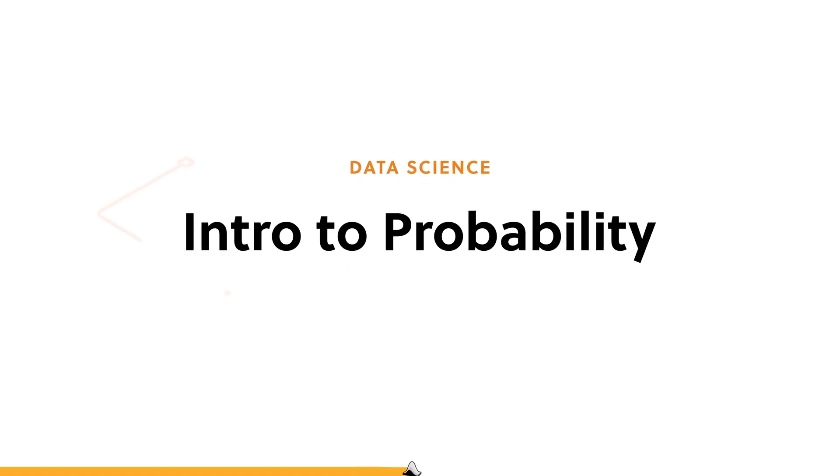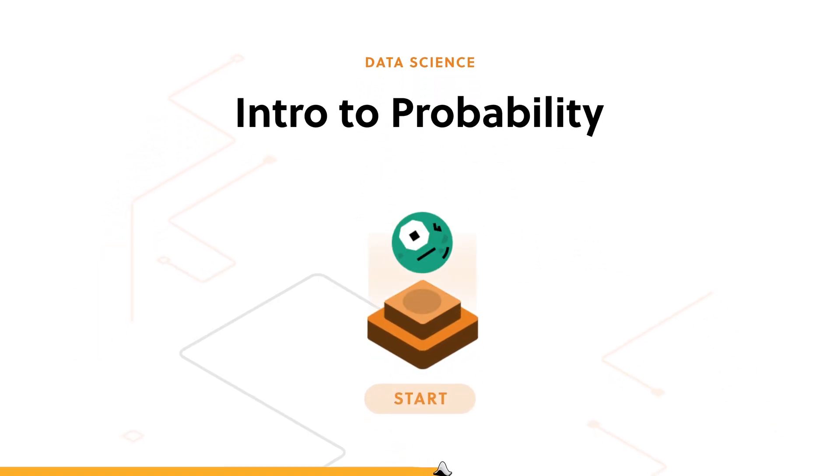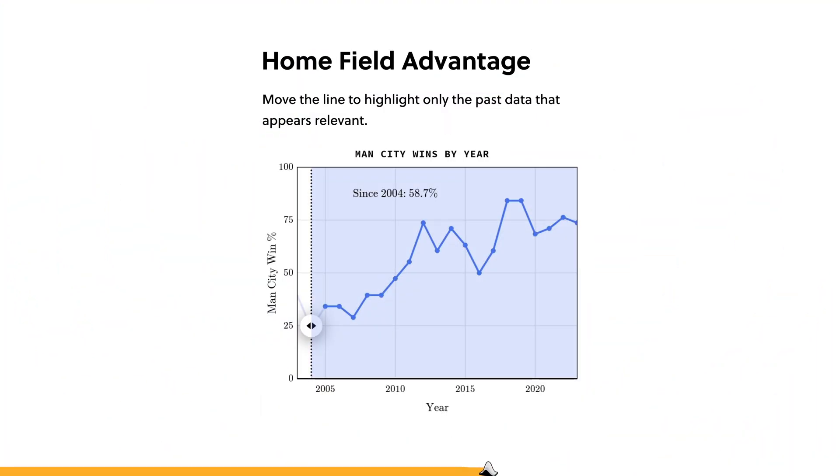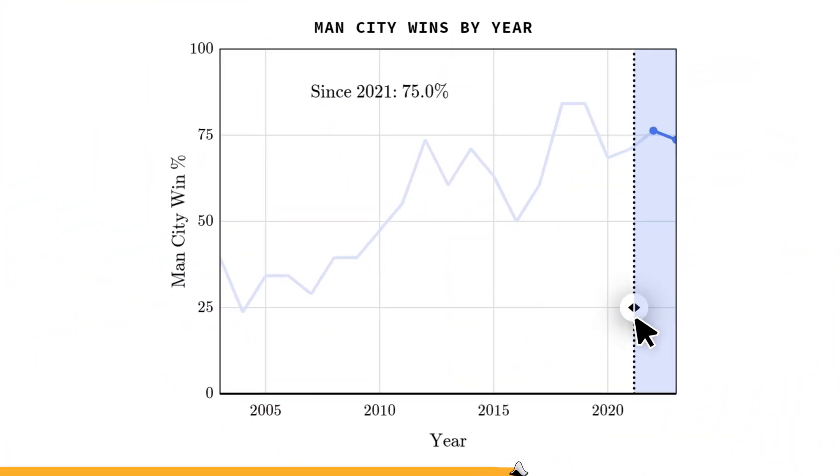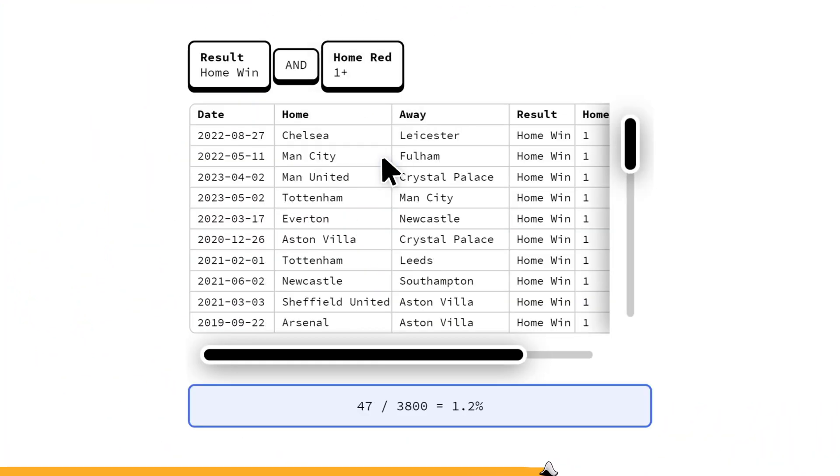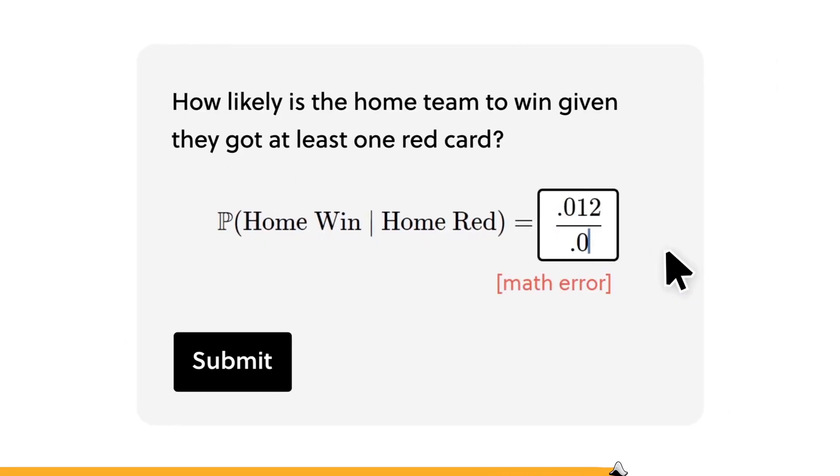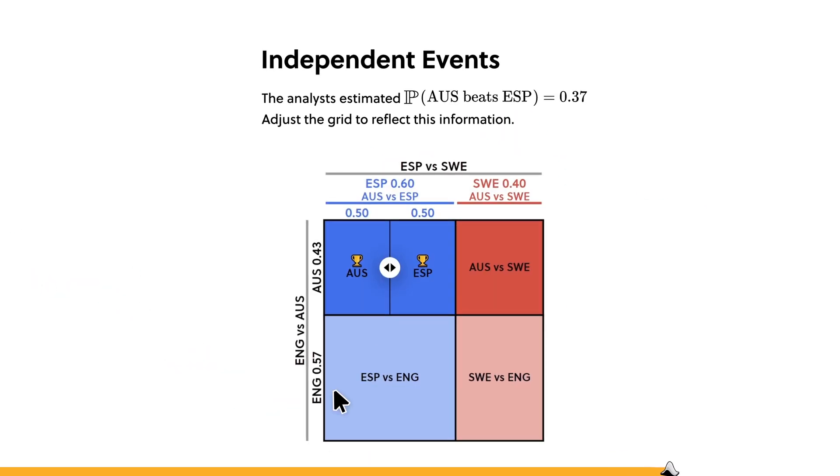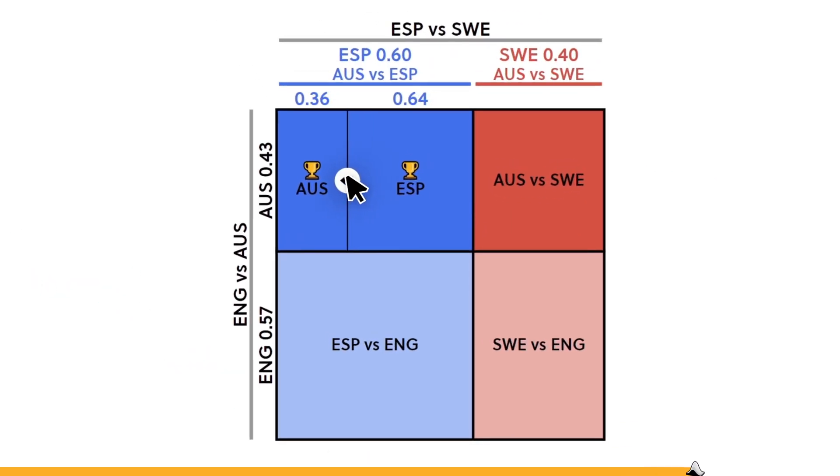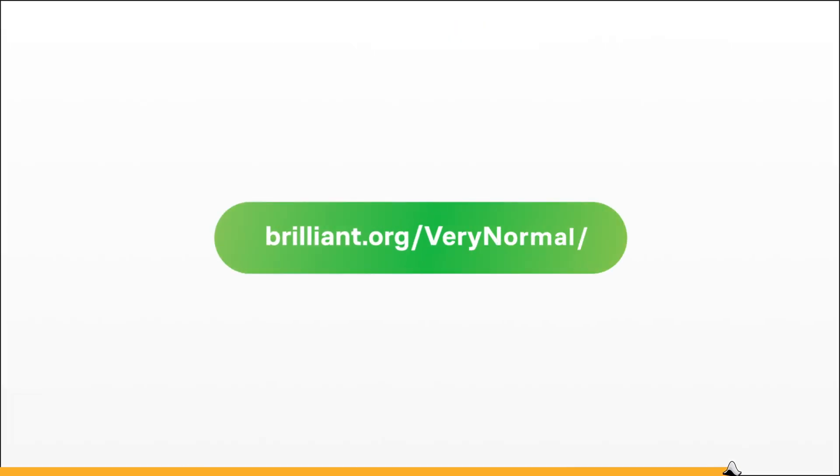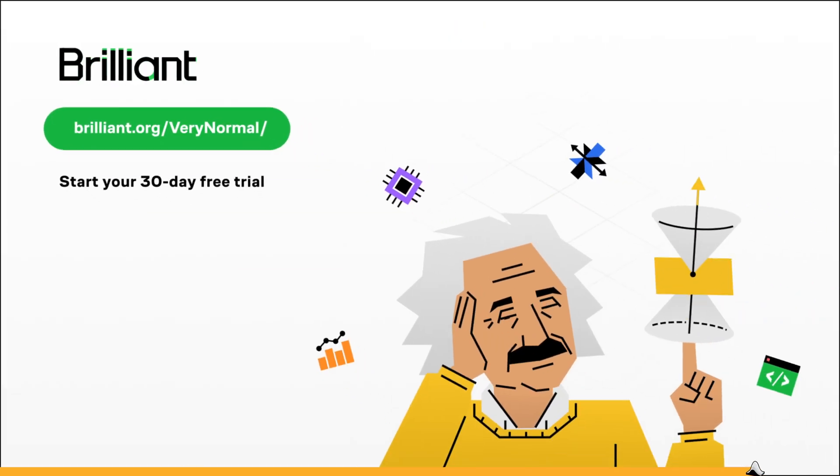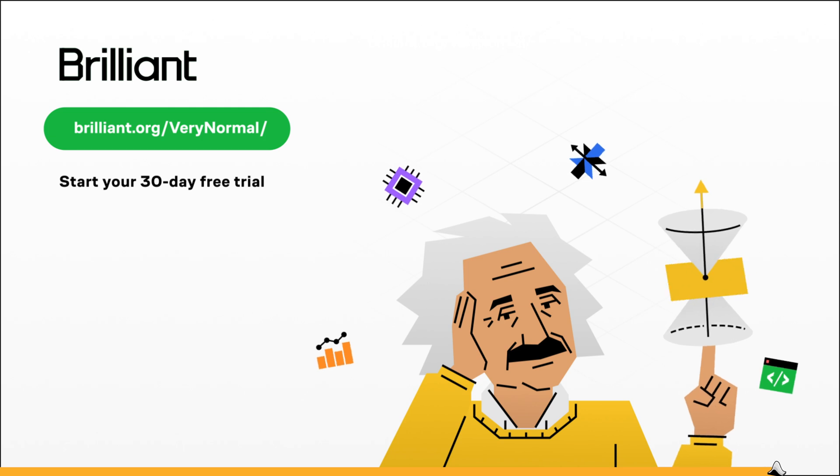Brilliant has both basic and advanced material to accommodate people who are at different points in their learning journey. For example, understanding probability is critical to truly understanding data and statistics. Brilliant offers several courses to get you up to speed, such as their Introduction to Probability and their Predicting with Probability course. From there, you can check your understanding through case studies and build models that let you do things like predict the next top song on Spotify. To try everything Brilliant has to offer for free for a full 30 days, visit brilliant.org slash verynormal or click on the link in the description. You'll also get 20% off an annual premium subscription if you do so. Thank you Brilliant for sponsoring this video.